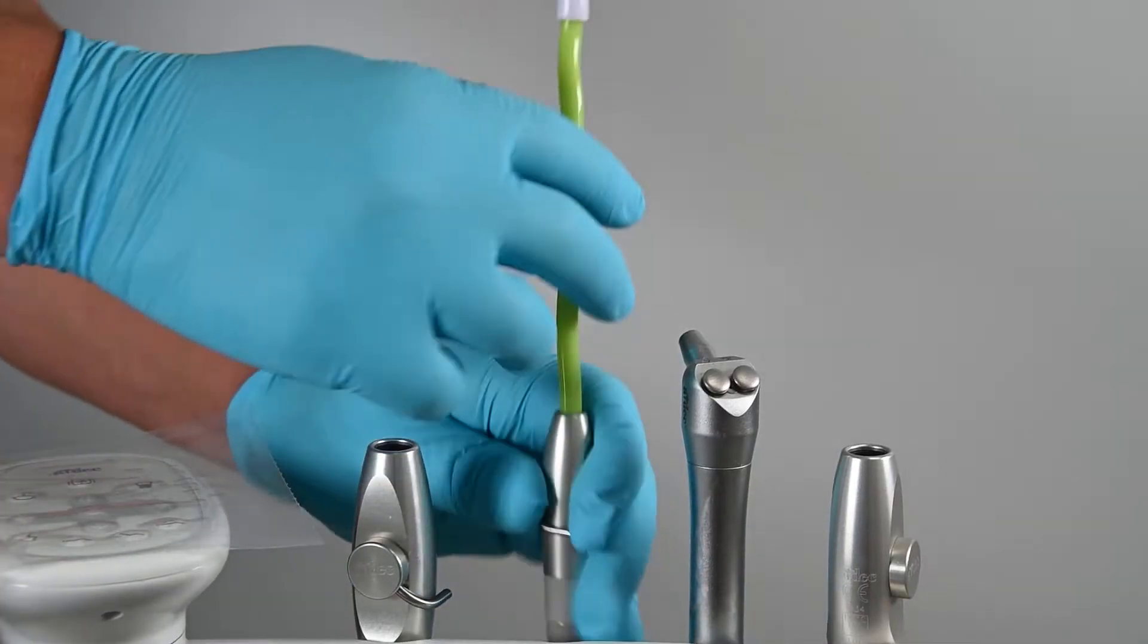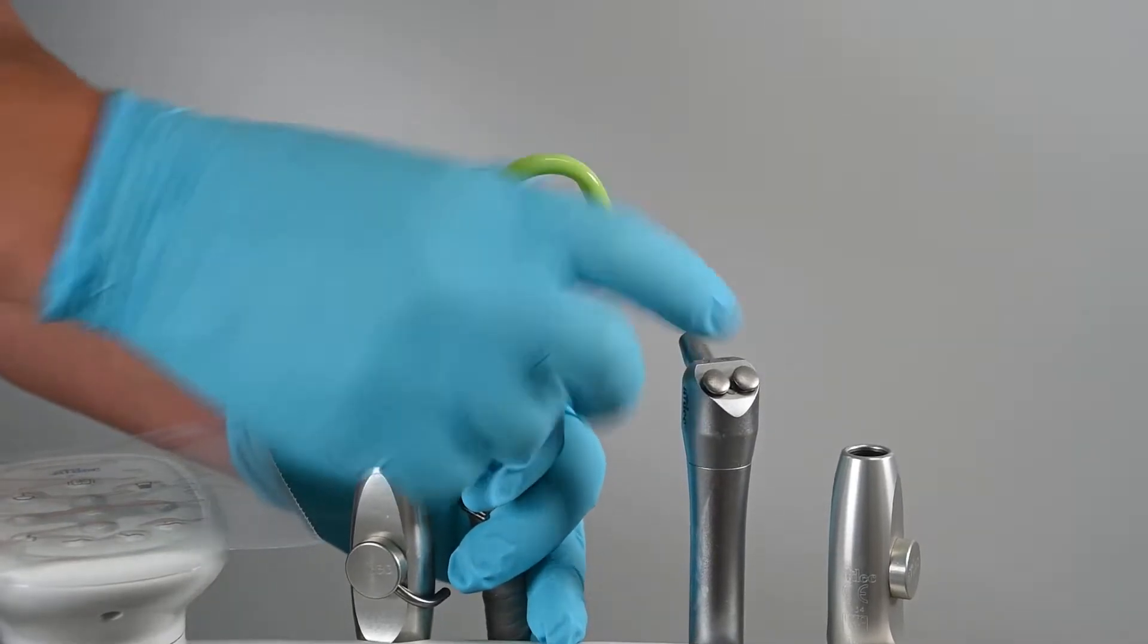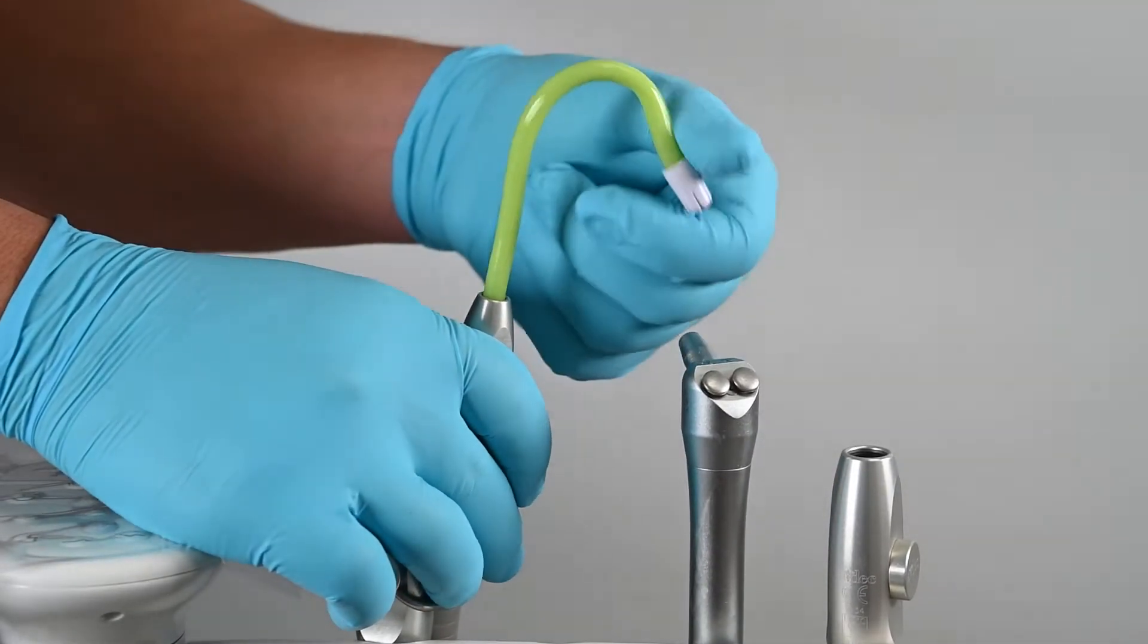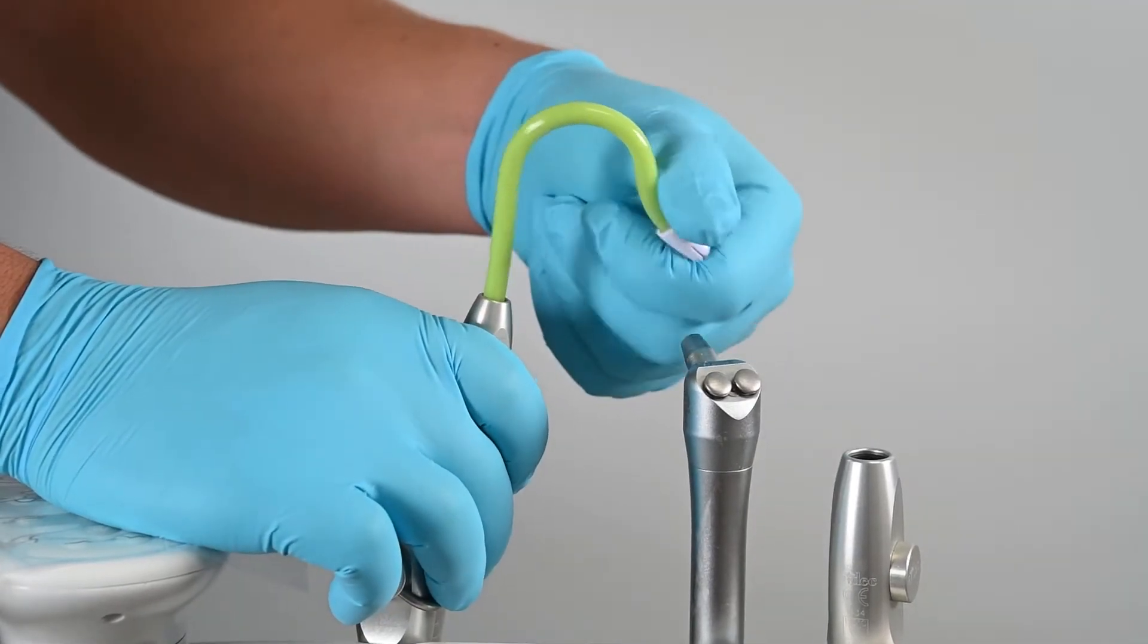When working with only a saliva ejector, a proper position can be achieved by creating two bends on the body. The first bend is to anchor the saliva ejector to the lip, and the second bend is to angulate the tip to remove intraoral fluid.